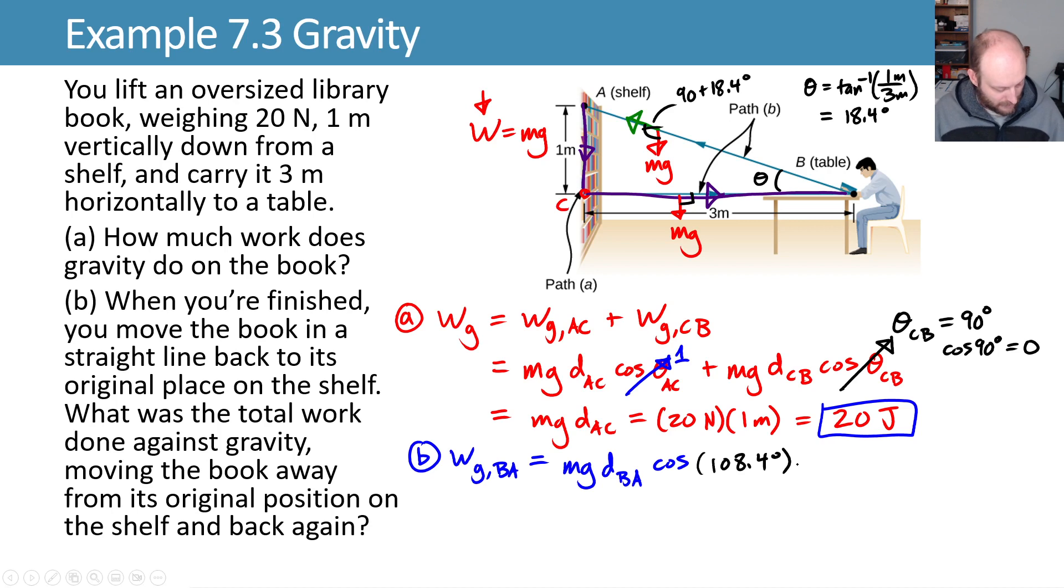So far, so good. One thing I'll point out, though, is that when we plug in values here we get 20 Newtons or Mg and then my D is the square root of 3 squared plus 1 squared in meters times the cosine of 108.4 degrees.